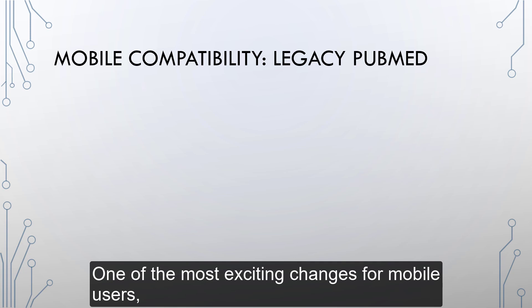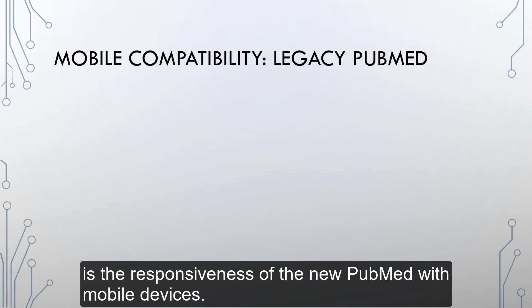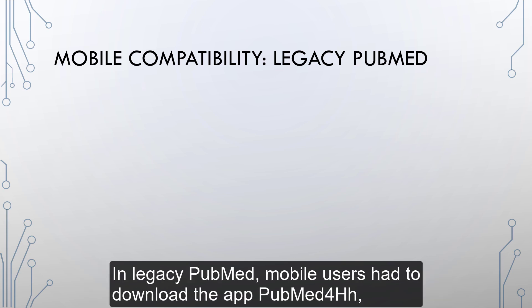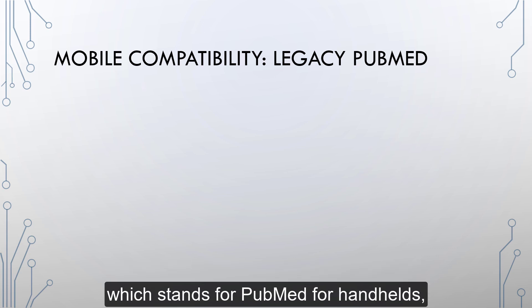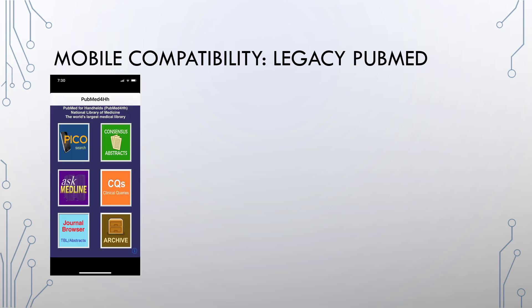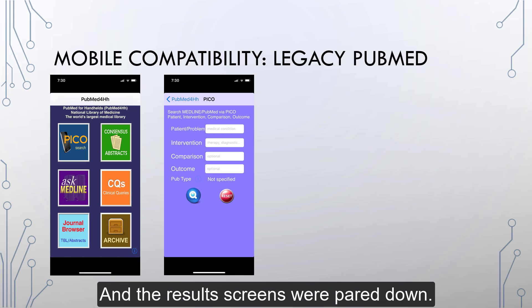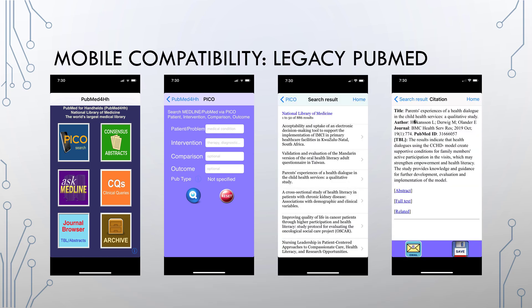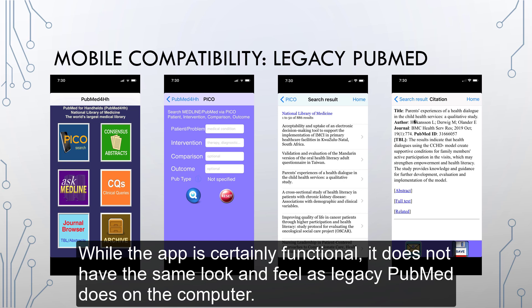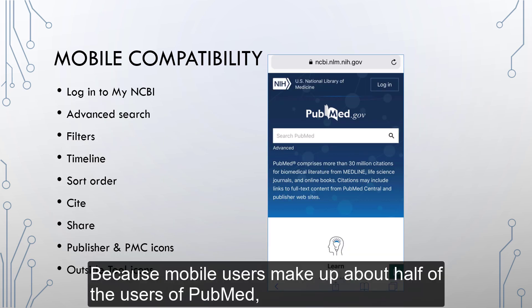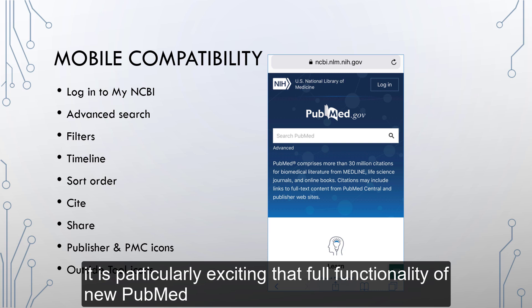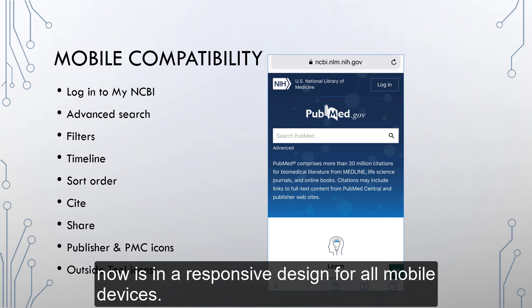One of the most exciting changes for mobile users is the responsiveness of the new PubMed with mobile devices. In legacy PubMed, mobile users had to download the app PubMed4HH — which stands for PubMed for Handhelds — and the results screens were pared down. While the app is certainly functional, it does not have the same look and feel as legacy PubMed does on the computer. Because mobile users make up about half of the users of PubMed, it is particularly exciting that full functionality of the new PubMed is now in a responsive design for all mobile devices.